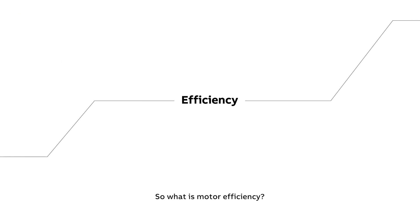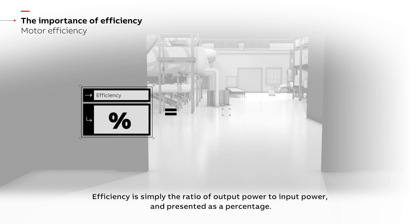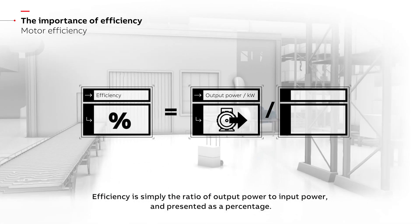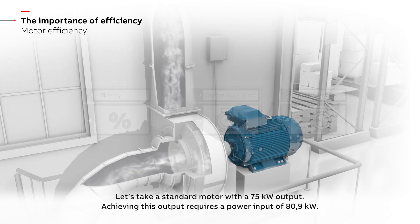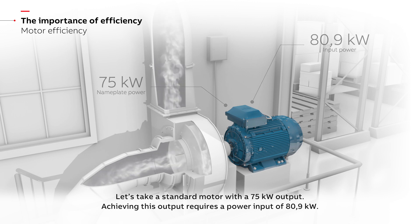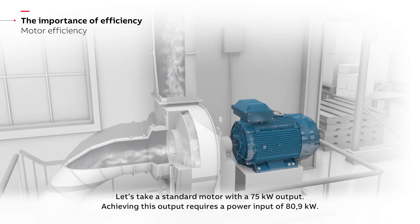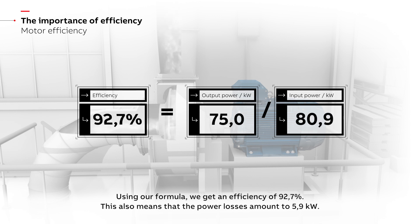So what is motor efficiency? Efficiency is simply the ratio of output power to input power, presented as a percentage. Let's take a standard motor with a 75 kilowatt output. Achieving this output requires a power input of 80.9 kilowatts. Using our formula, we get an efficiency of 92.7%. This also means that the power losses amount to 5.9 kilowatts.